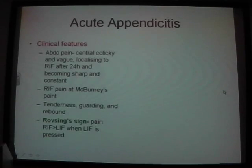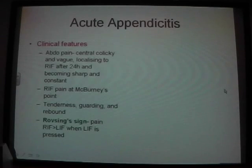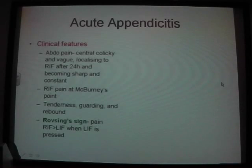Clinical features include central colicky abdominal pain — that's how it initially starts, and that's sudden — and then it radiates to the right iliac fossa within 24 hours, or after 24 hours, becoming sharp and constant. On examination, you find tenderness, guarding, and rebound.